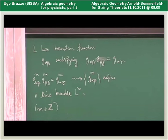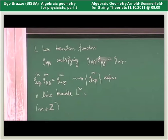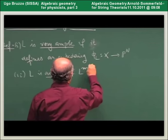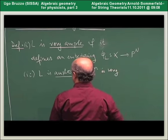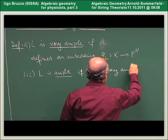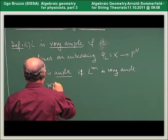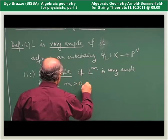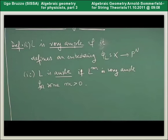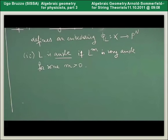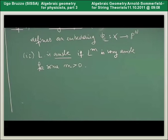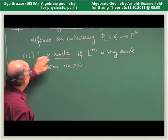So we know what the power of a line bundle is. We say that L is ample if one of its powers is very ample — specifically, L is ample if L^m is very ample for some positive m. This is done because the differential geometric criterion expressed by the Kodaira Embedding Theorem doesn't detect very ampleness, but just ampleness.